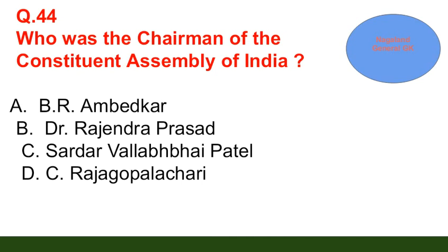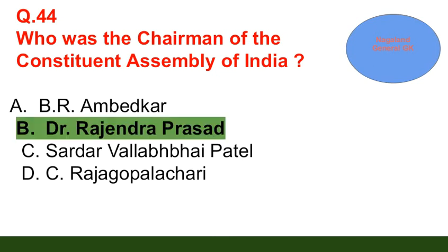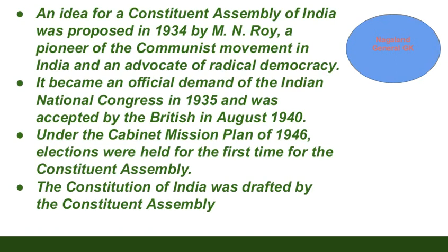Question number 44: Who was the Chairman of the Constituent Assembly of India? Option A: B.R. Ambedkar; option B: Dr. Rajendra Prasad; option C: Sardar Vallabhbhai Patel; option D: C. Rajagopalachari. The correct answer is option B — Dr. Rajendra Prasad. The idea for a Constituent Assembly was proposed in 1934 by M.N. Roy, a pioneer of the communist movement in India. It became an official demand of the Indian National Congress in 1935 and was accepted by the British in 1940.